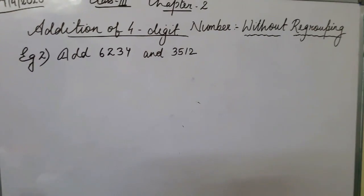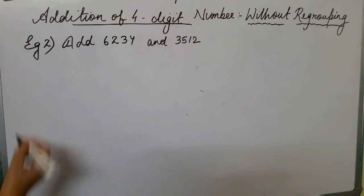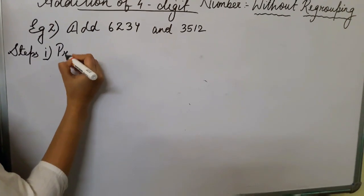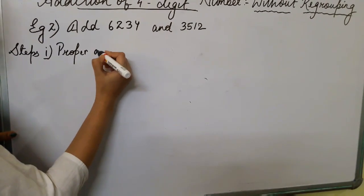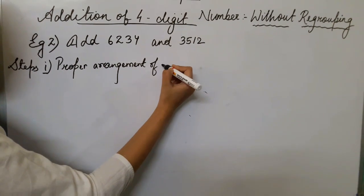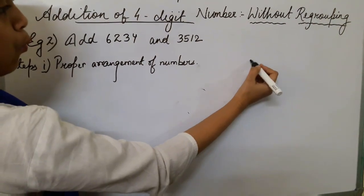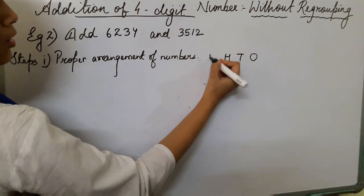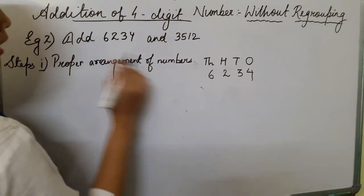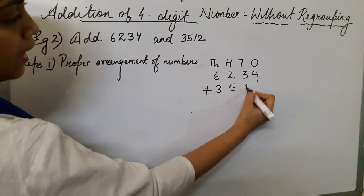Let's see one more example without regrouping: add 6,234 and 3,512. We follow the same steps. First, proper arrangement of numbers in ones, tens, hundreds, thousands columns. We write 6,234, then the addition symbol, then 3,512.